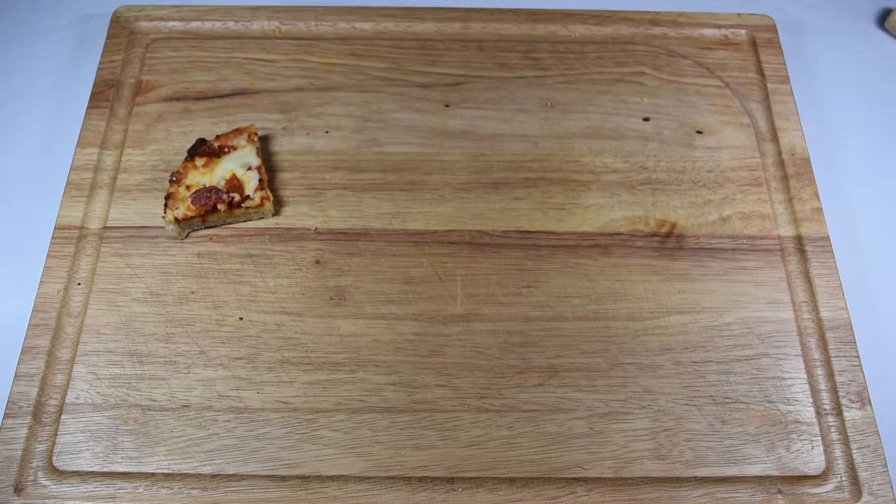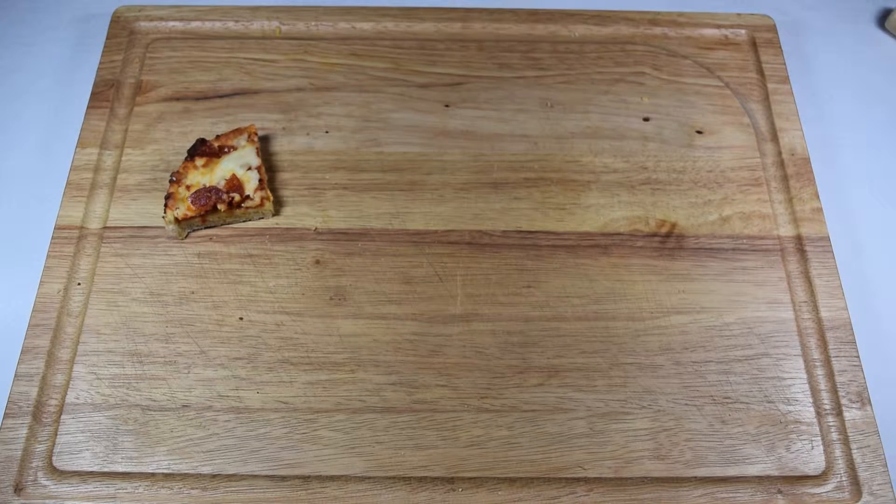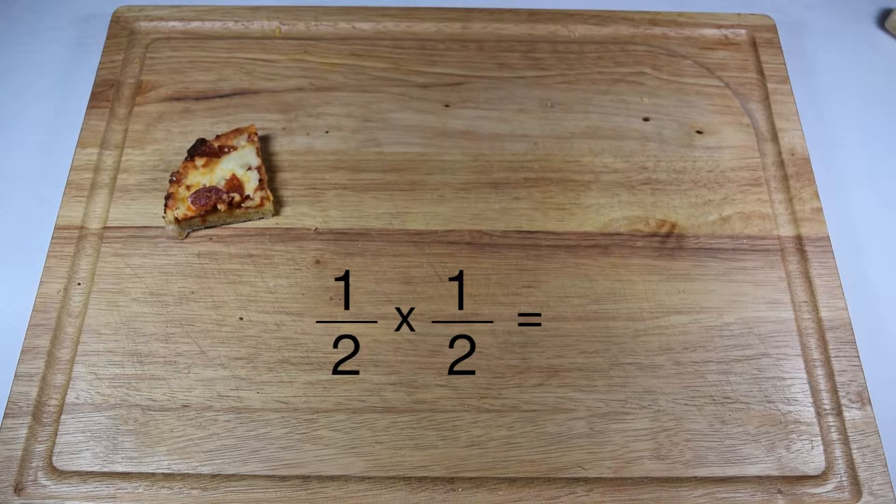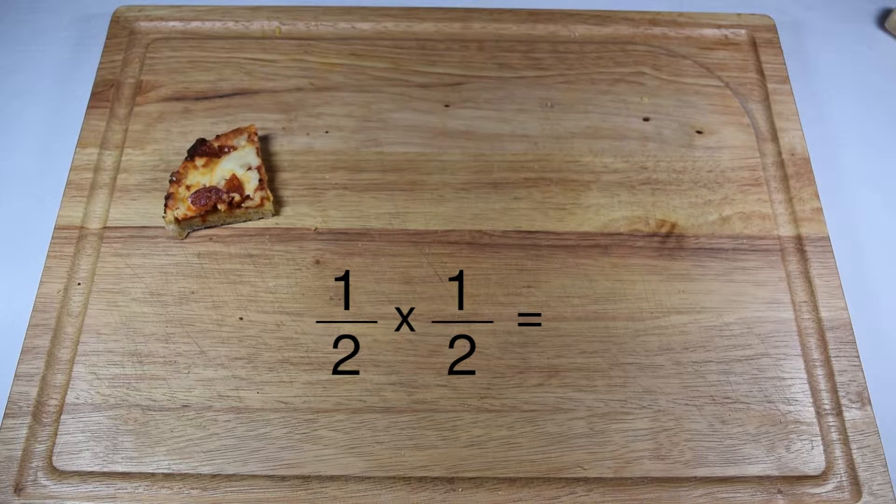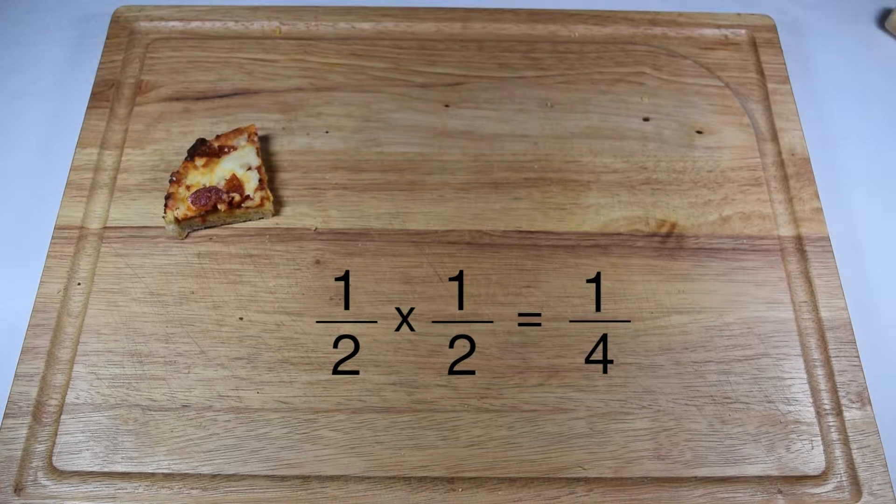So eating part of a part, or in this case one half of one half, is actually a key setup for a multiplying fraction problem. One half of one half would be the same as multiplying one half times one half, which we can see from our pizza gives us one fourth.